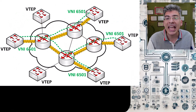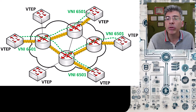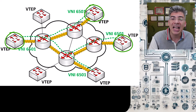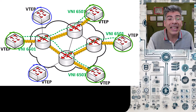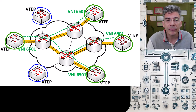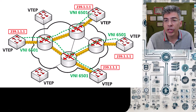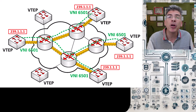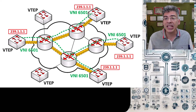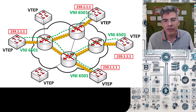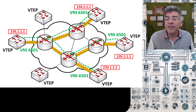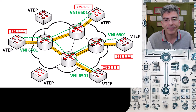Here we have a VXLAN topology where we have several VTEPs configured with VNI-6501, but two of these VTEPs are configured with other VNIs and don't contain VNI-6501. With a multicast underlay solution, we correspond each particular VNI with a specific multicast IP address. So all VTEPs that contain VNI-6501 are configured to join a specific multicast group address — in our topology, we configure this as 239.1.1.1.